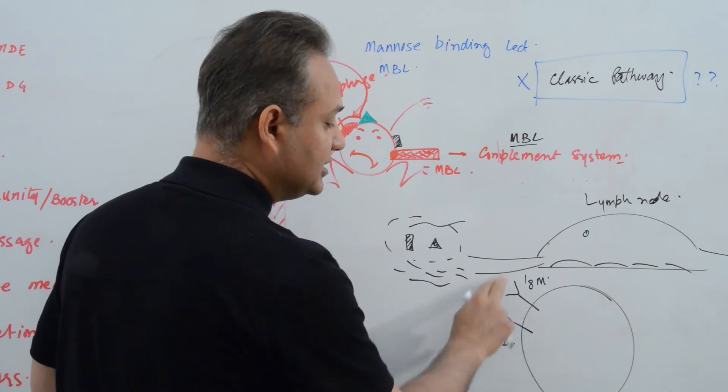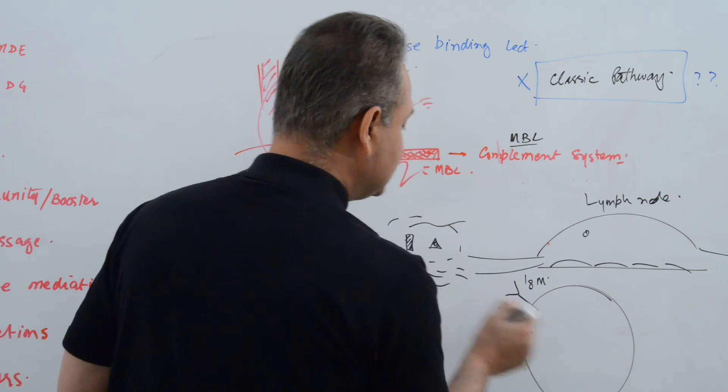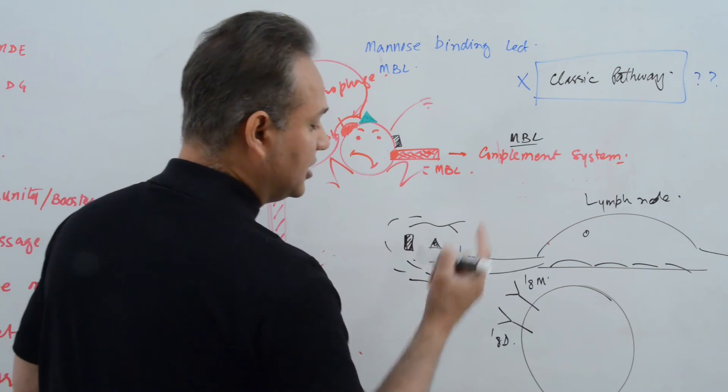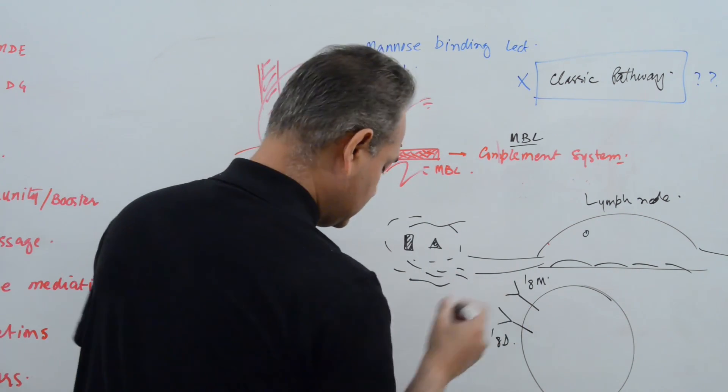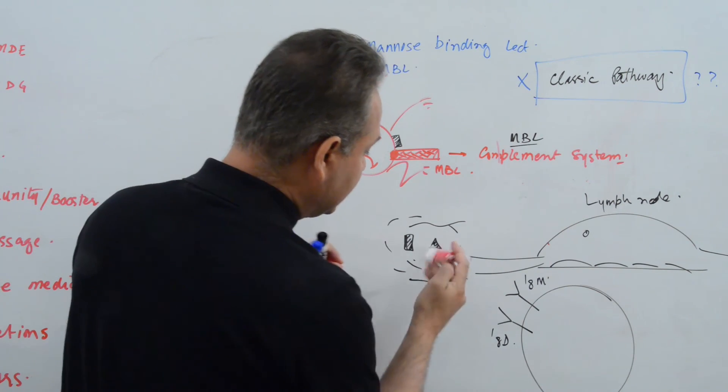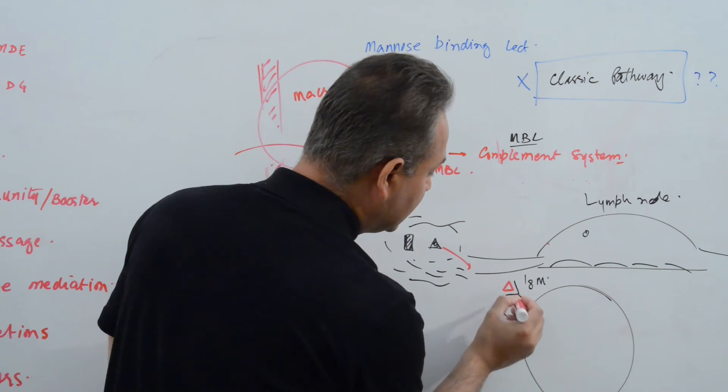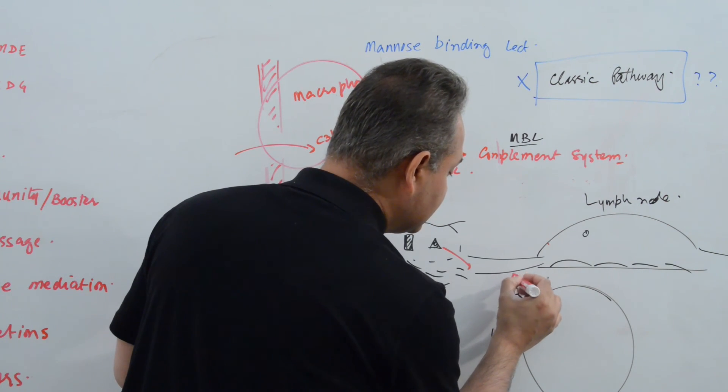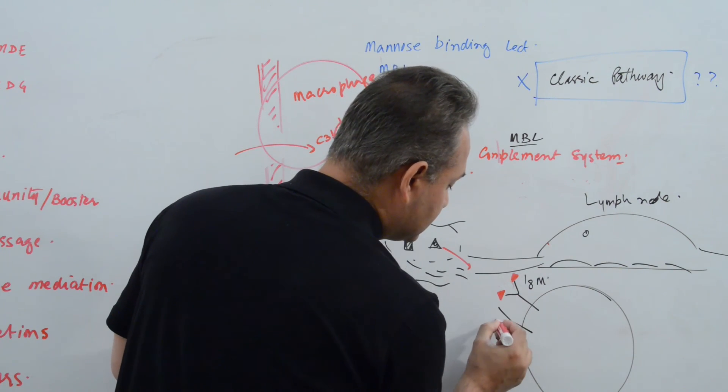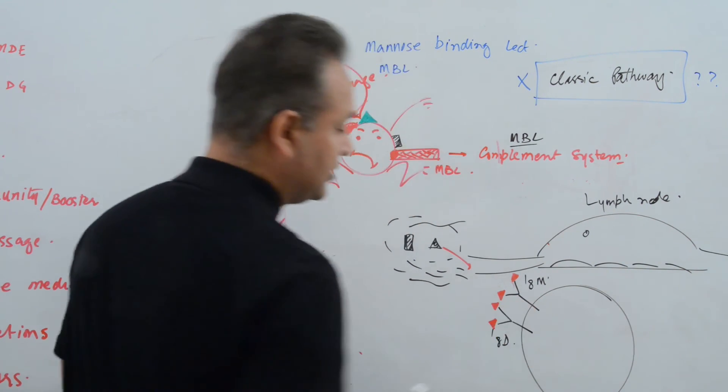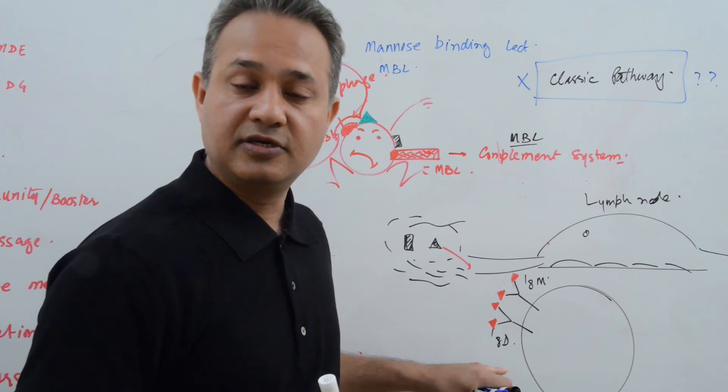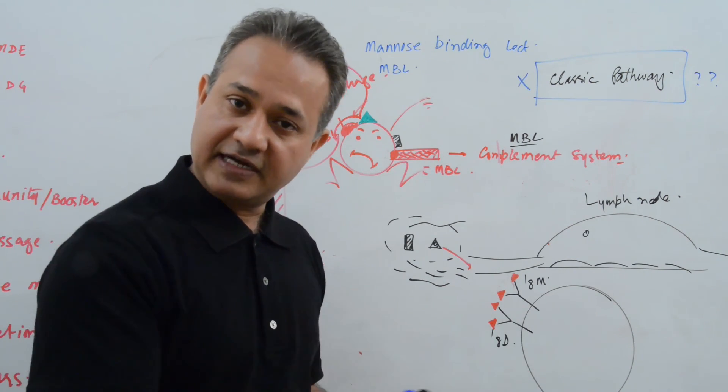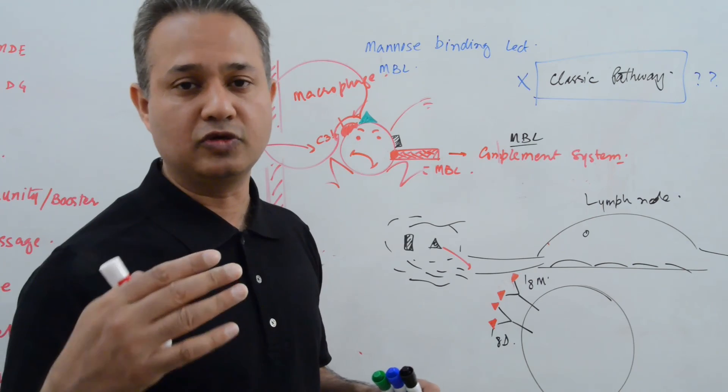So now, the IgM and IgD are present on a B cell, and this B cell is, let's say, it can recognize this triangular antigen. So now that triangular antigen comes and attaches. This is actually not the right place to attach. Let's attach it where it should attach. So here, the antigen has attached to the antibodies. This will cause the B cell to become active and become plasma cell and make immunoglobulins.